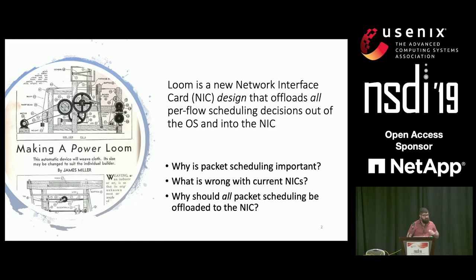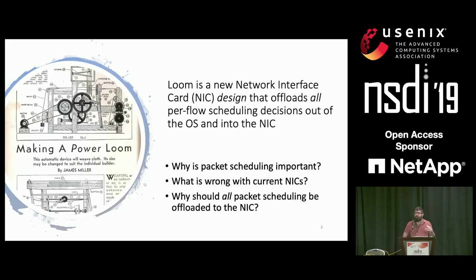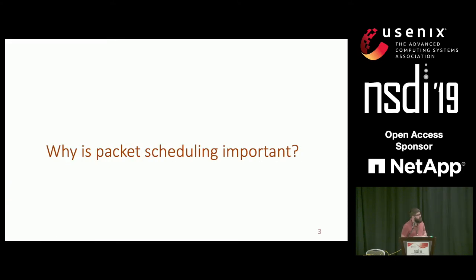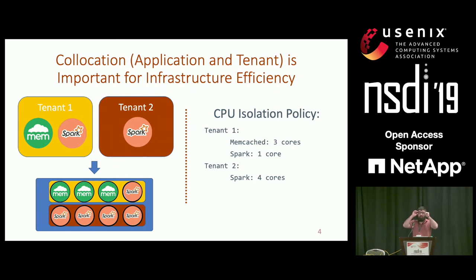We'll have a two-phase introduction. To understand why we want to offload packet scheduling to the NIC, we'll cover why it is important, what is wrong with current NICs, and why Eiffel is not able to enforce policies today. The motivation is application co-location — increasing CPU and server utilization. We have two tenants: tenant one running Memcached and Spark, tenant two just running Spark.